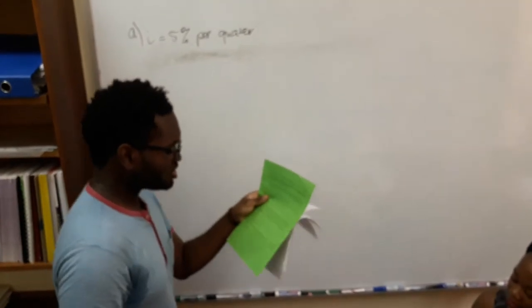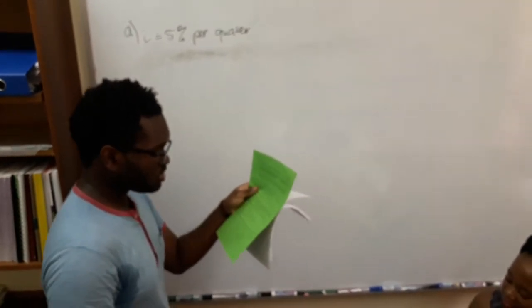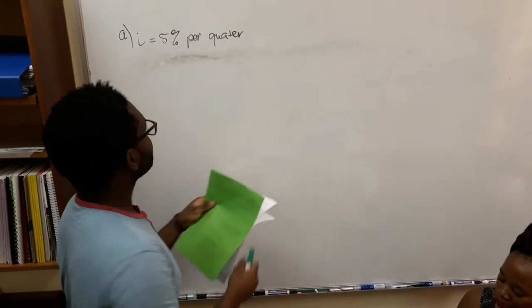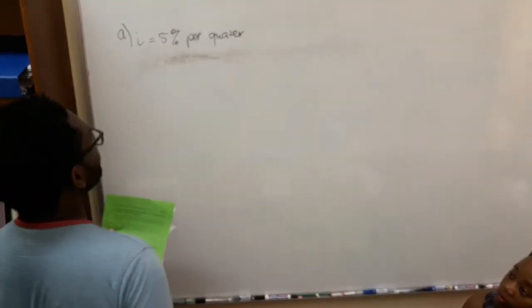As you see for question 6, they ask us to change the following effective interest rates to the equivalent nominal rate per annum, compounded monthly. In question A, we see that we have 5% per quarter.